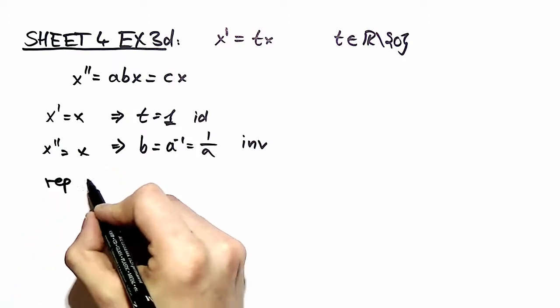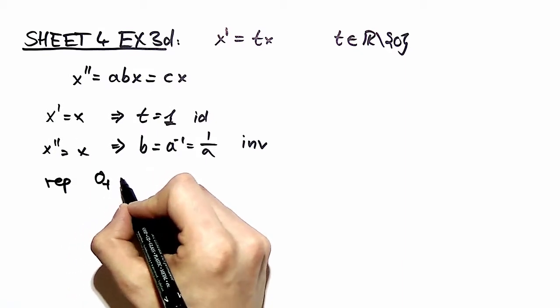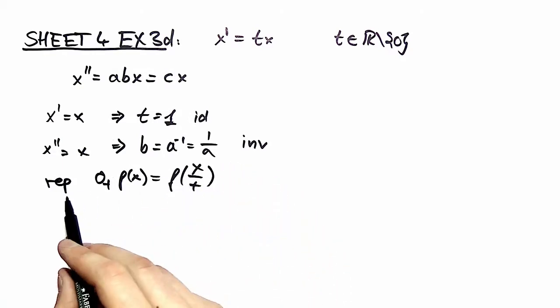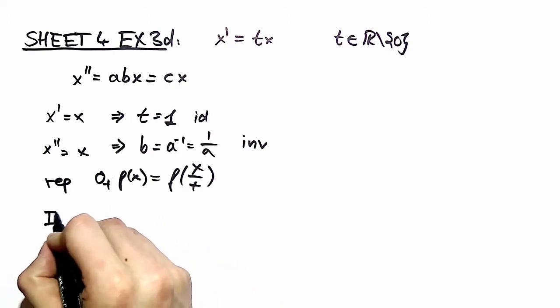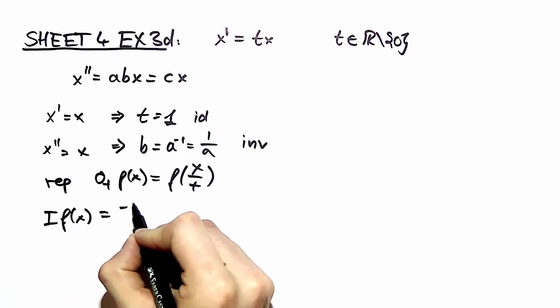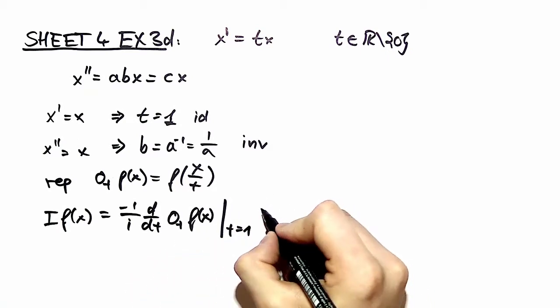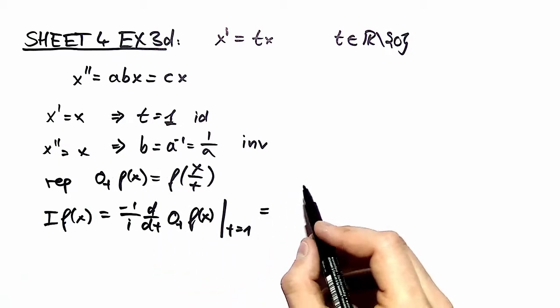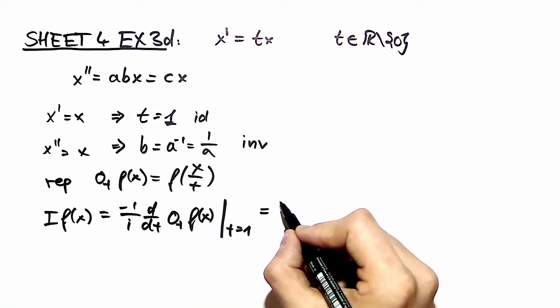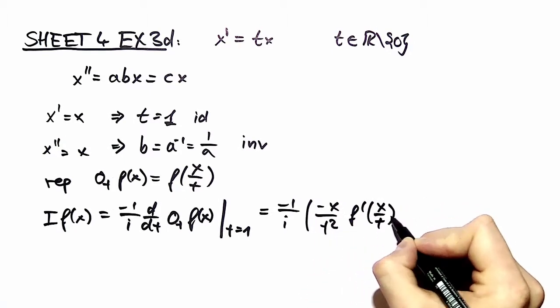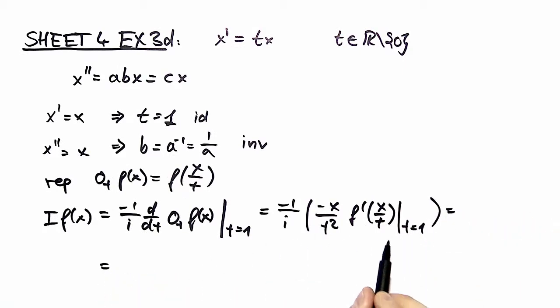Now we are given a representation of this group operation, namely that the operator O_t applied to f(x) yields f(x/t). Now we want to find the generator, and we find this using the definition of page 80: this is by definition d/dt of O_t f(x) evaluated at t equal to 1, at the identity element. Here we insert our definition and use the chain rule to obtain minus 1 over i minus x over t squared f prime of x over t, evaluated at t equal to 1. Now we do that evaluation and arrive at x over i d/dx f(x), and we found our generator i. This is it.